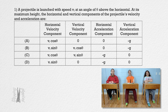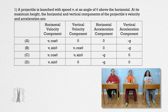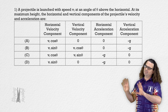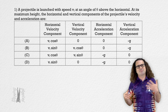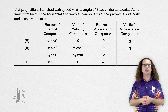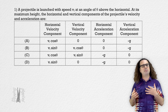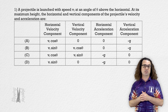Question 1. A projectile is launched with speed v sub i at an angle of theta above the horizontal. At its maximum height, the horizontal and vertical components of the projectile's velocity and acceleration are… We can all see the multiple choice options. Bobby, please begin solving this problem.